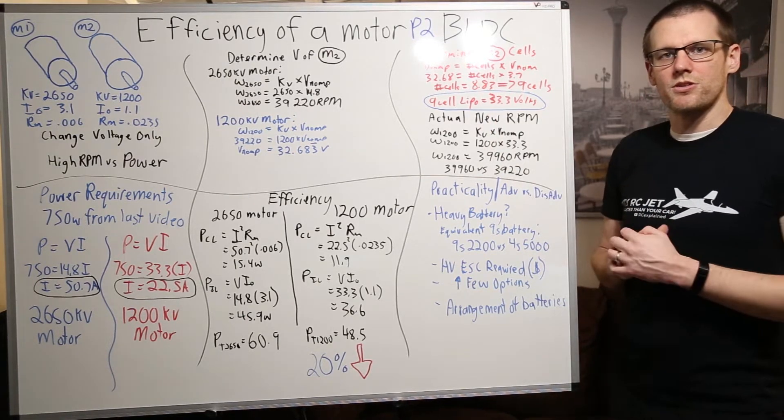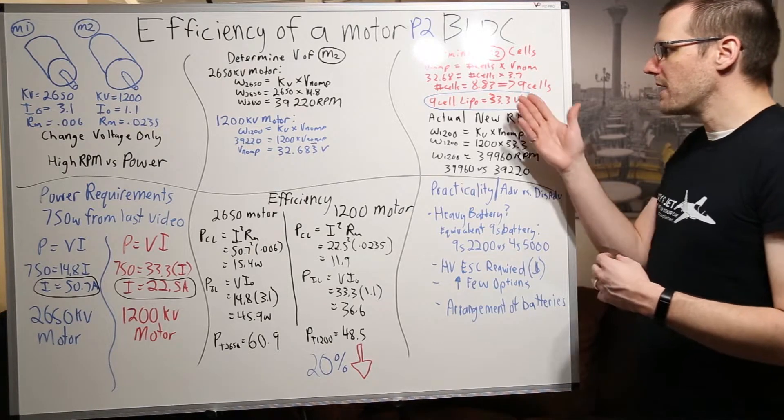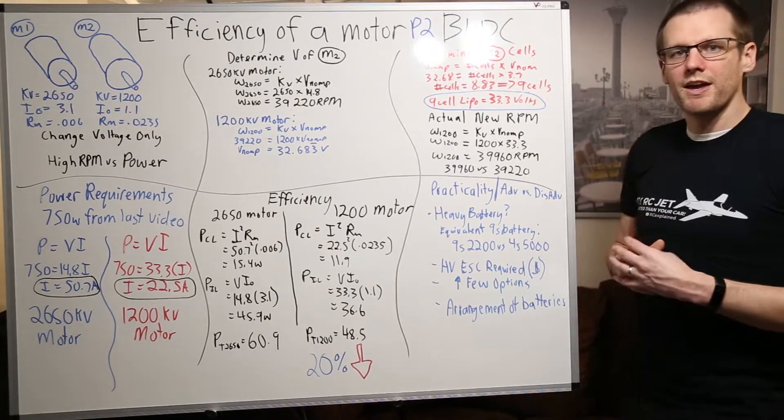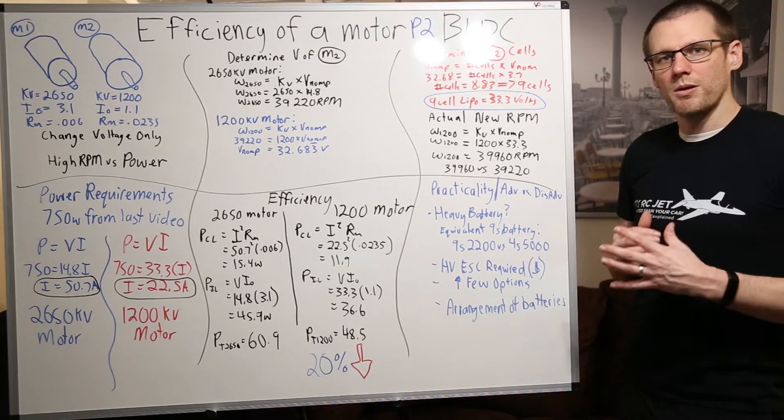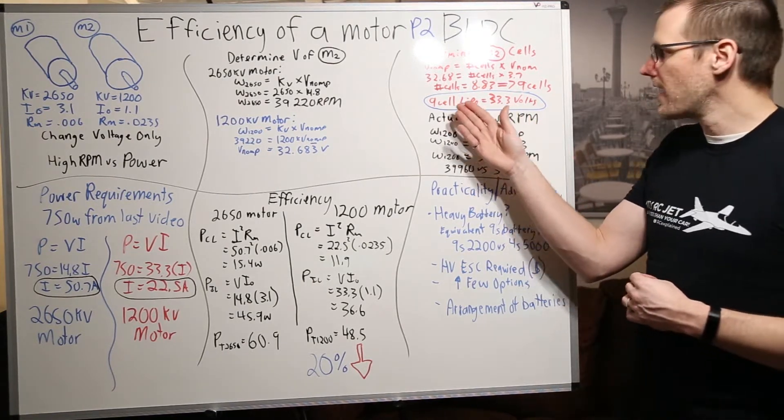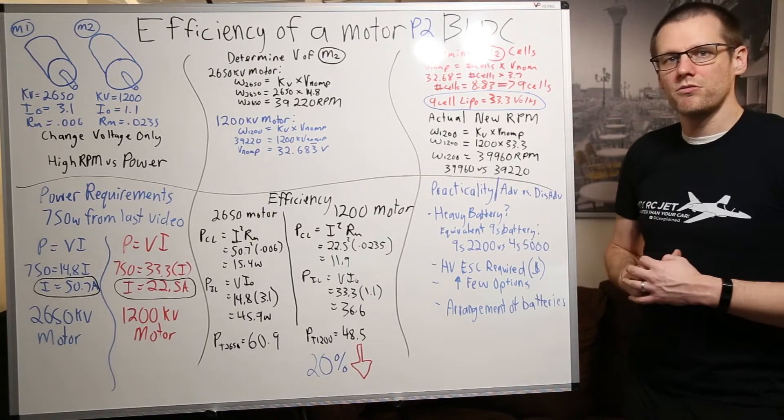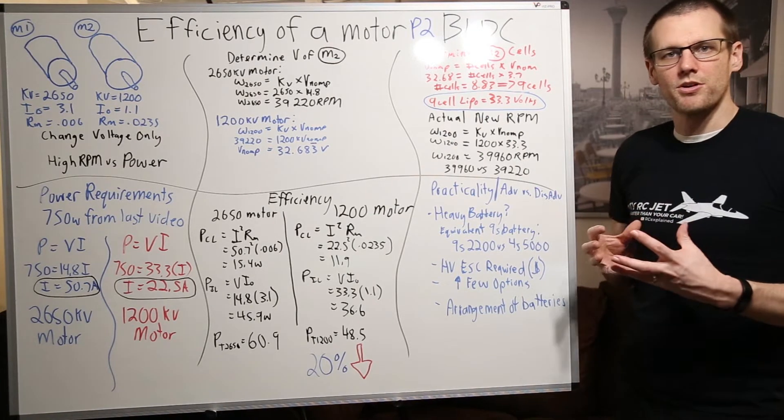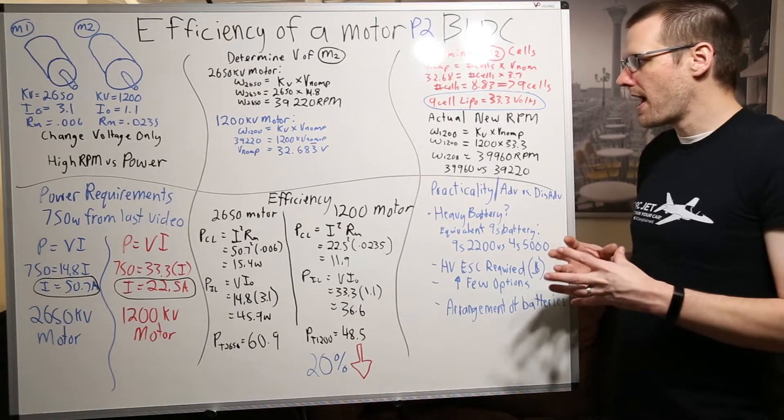We then round this to the closest whole number and that being 9. We're going to have a 9 cell lithium polymer pack used in this example. We take our 9 cell we multiply that by the 3.7 and we end up getting 33.3 volts nominal as an output of that pack.